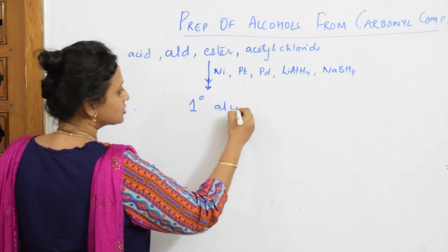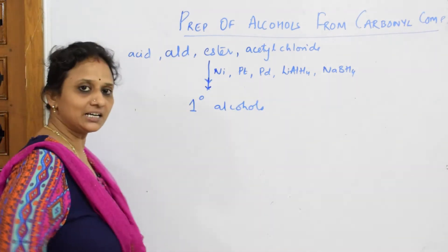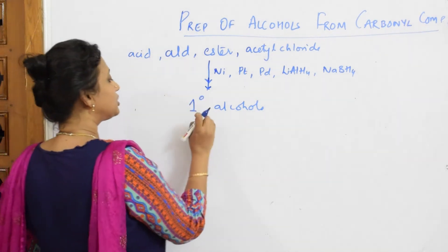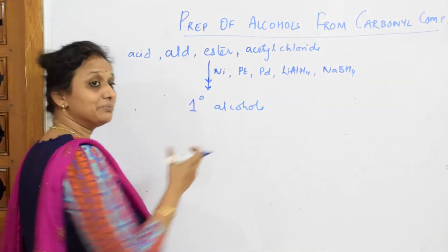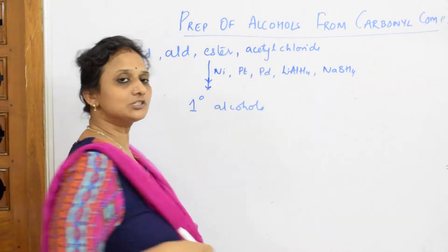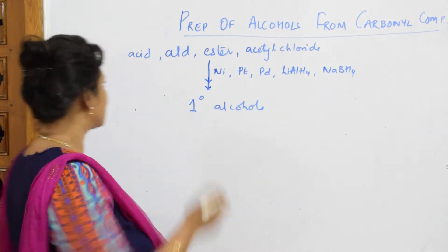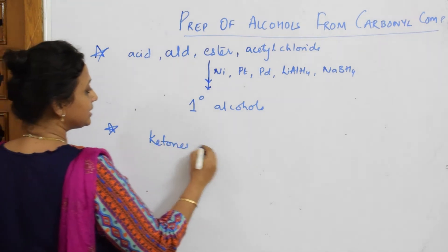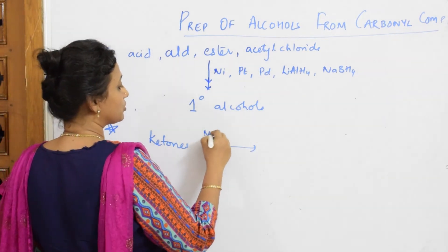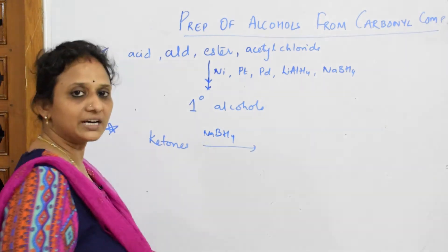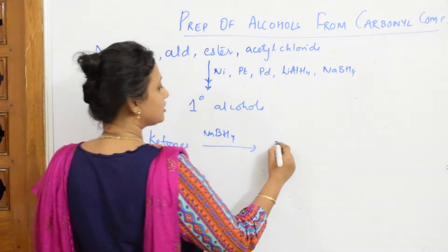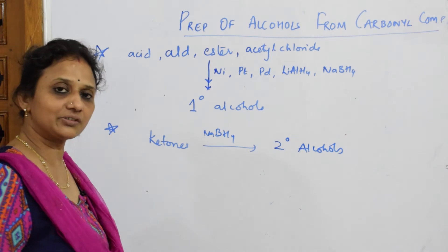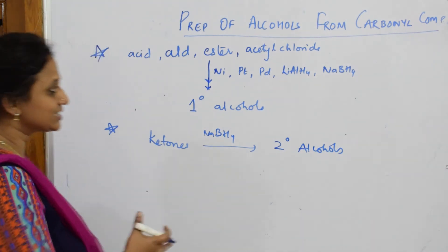They will turn into primary alcohols only. Acid won't convert directly — it'll first go to ester, then become primary alcohol. Aldehyde converts to primary alcohol; ester also gives a mixture of primary alcohols; acetyl chloride also gives primary alcohols. Next, when you are treating ketones with any of these reducing agents like sodium borohydride, ketones will always give you secondary alcohols. Remember this — it makes exam questions easy.